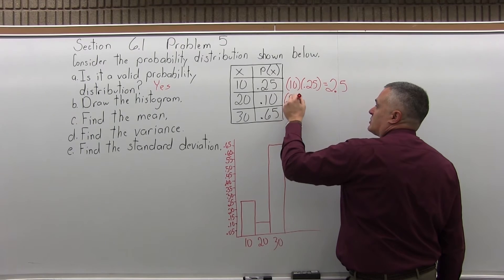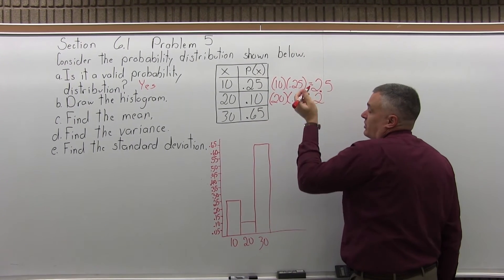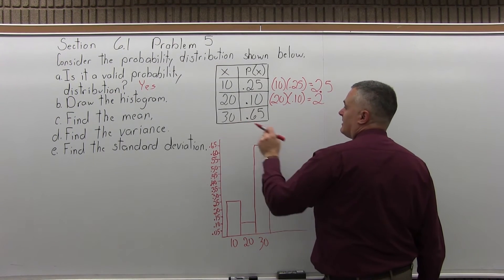And then the middle row, the number in the first column is 20 times this probability is 0.10. 20 times 0.10 is 2, 2.0 if you like, or just 2.